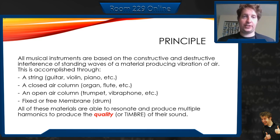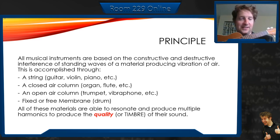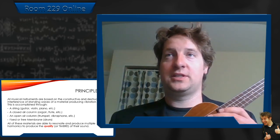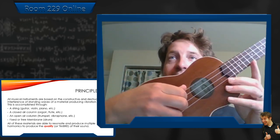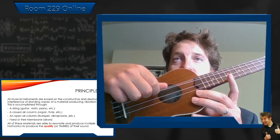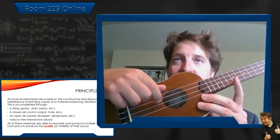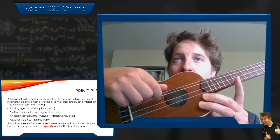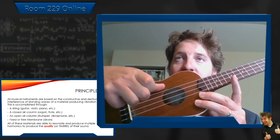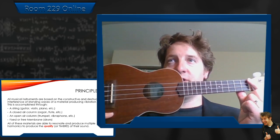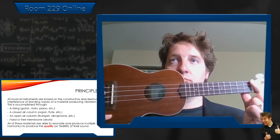A stringed instrument, like a guitar, a violin, a piano, or this ukulele here — it works by, first, we have to start the sound, and that starts with just plucking the string. I'm using my finger to cause the string to vibrate. Once I've caused that initial offset — I've taken my string from its equilibrium position and moved it away — it wants to go back, and there's a standing wave between the nut and the bridge, between those two fixed points.